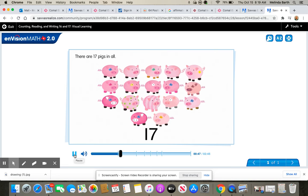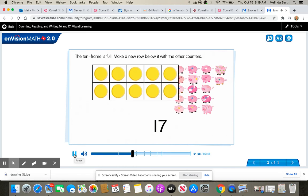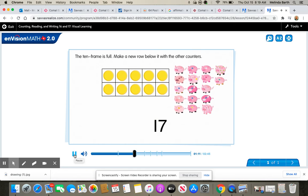There are 17 pigs in all. Let's show 17 with counters and a 10 frame: 1, 2, 3, 4, 5, 6, 7, 8, 9, 10. The 10 frame is full. Make a new row below it with the other counters. 11, 12, 13, 14, 15, 16, 17. How do the counters match the pigs?